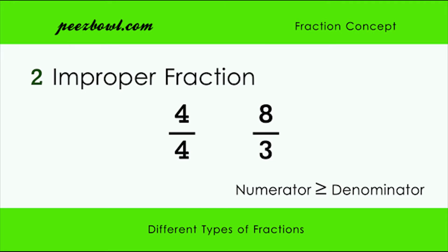As you can see that in the first example, numerator is equal to its denominator, and in the second example, numerator is greater than its denominator. So, these types of fractions are examples of improper fractions.